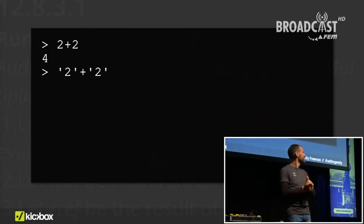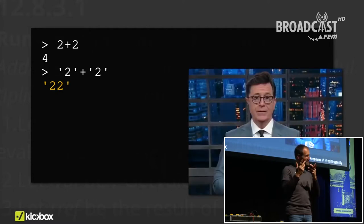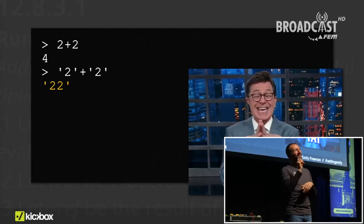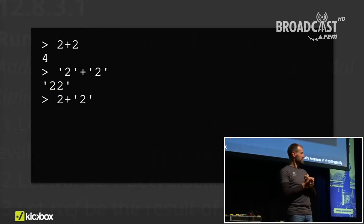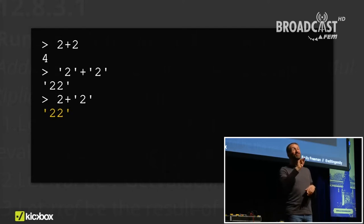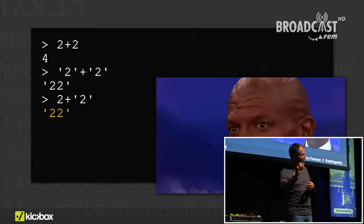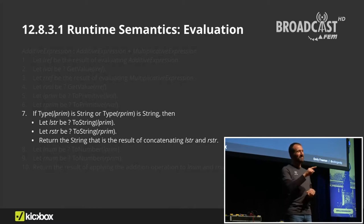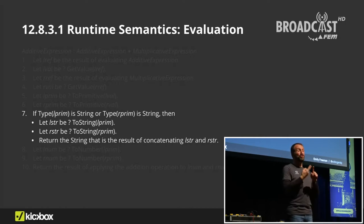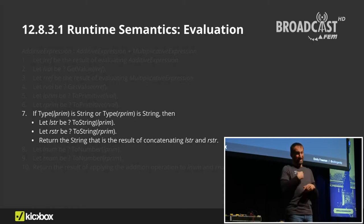How about a string of two plus a string of two? String or an integer? And what about an integer of two added to a string of two? The reason a number added to a string is evaluated as a string is because of step seven in that long process. If either side of the plus operator is a string, then it will be evaluated as if both are strings.